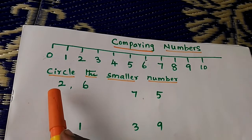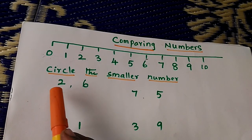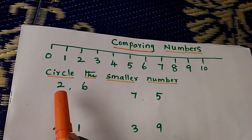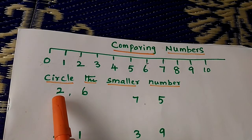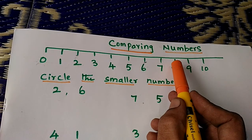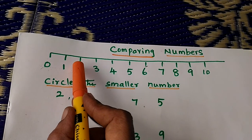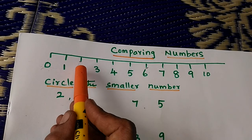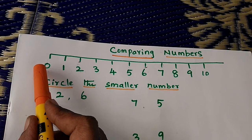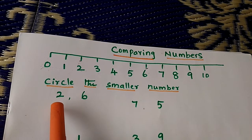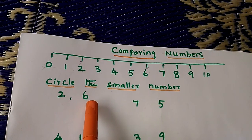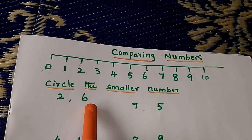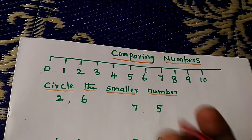We have 2 numbers — 2 and 6. Which one is the smaller number? 2. Where is 2 here? Find out 2. Where is 6? Here. 2 is closer to 0, so 2 is smaller than 6. Circle the smaller number.